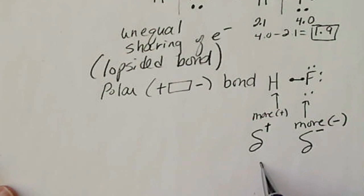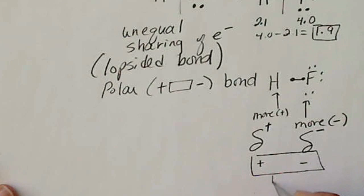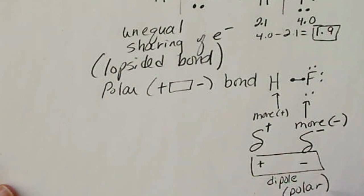So this right here, this positive-negative distribution, constitutes a dipole, or all that means is we have a polar bond.